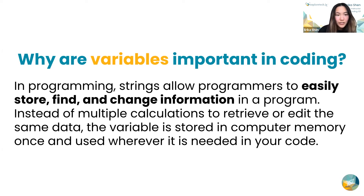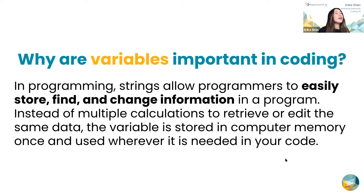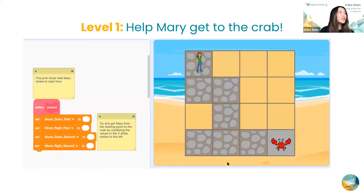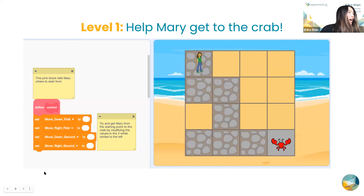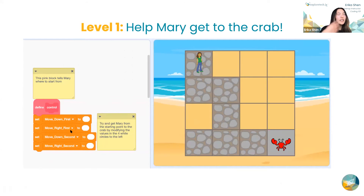If you guys have any questions, feel free to unmute yourselves or put it in the chat. Your first level will be helping Mary get to a crab. You'll see in this coding block there's a 'define' and then a bunch of little 'set' blocks. Your variables in this case would be like 'move down first,' 'move right first,' and you'd be setting those values to a certain number to help her get to the little crab.